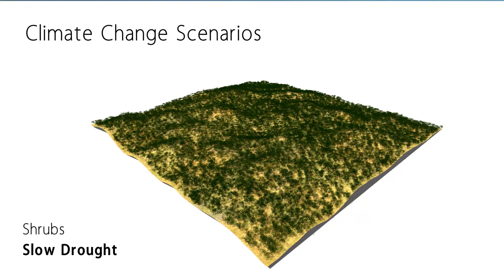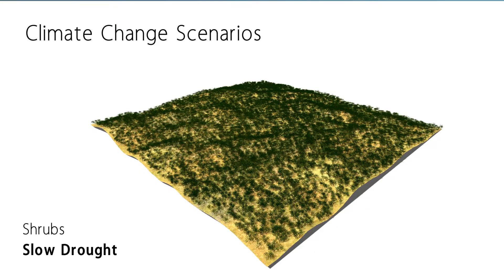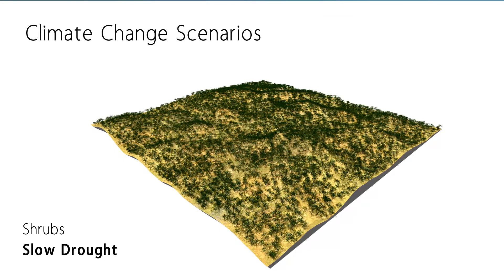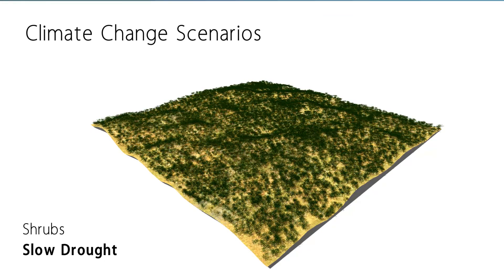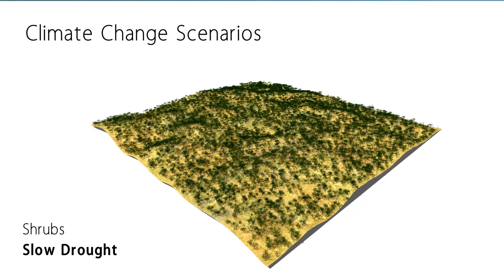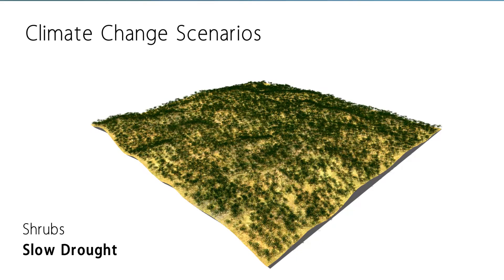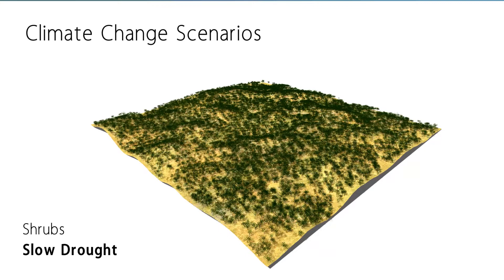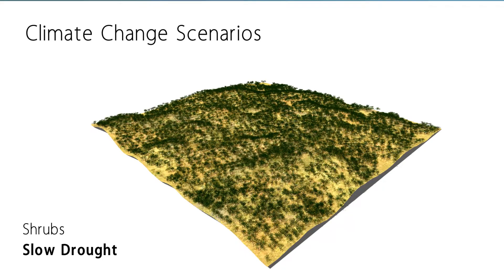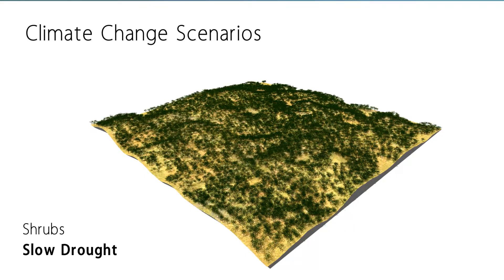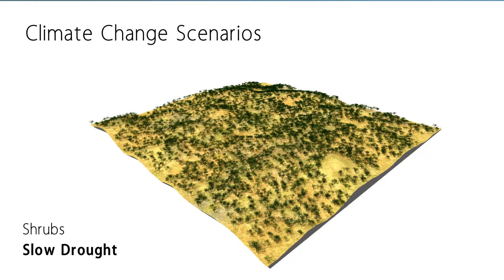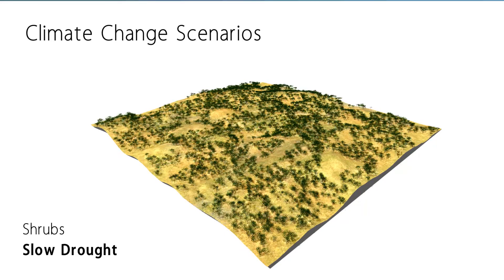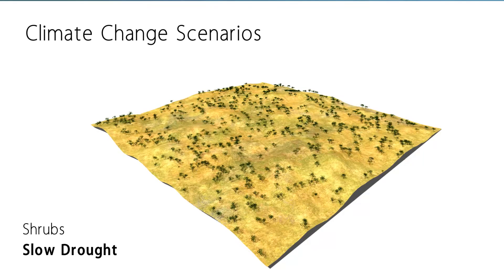Our novel method is capable of simulating a vast array of different vegetation responses to climatic changes. In this scene we decrease precipitation slowly over time. This shrubland adapts to the changing environment and creates a more dispersed plant distribution. As drought conditions increase, gaps in the vegetation start appearing before the shrubland finally vanishes.